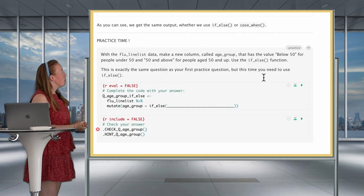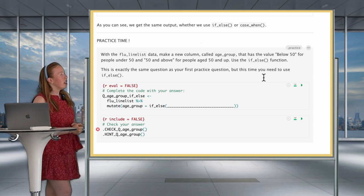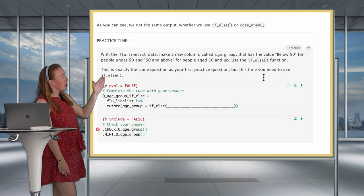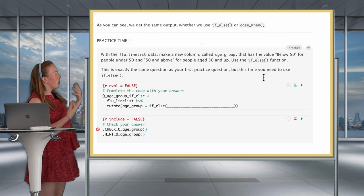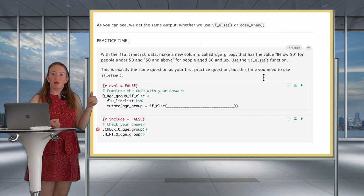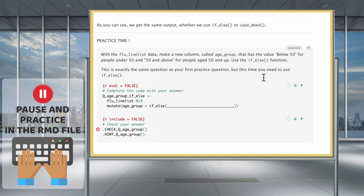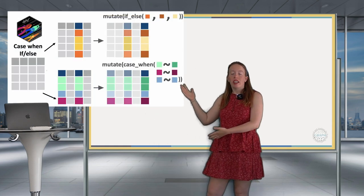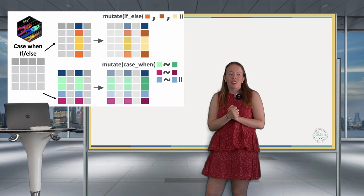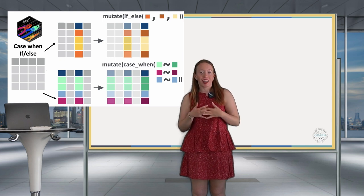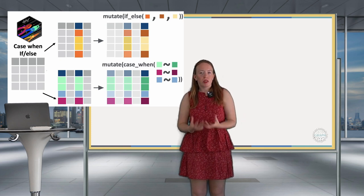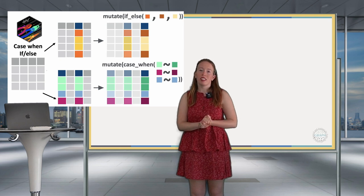The last practice question: using the flu line list, make the age_group column with 'below 50' and '50 and above' using if_else — the same as your first practice question but written with an if_else statement. Congratulations, you now master case_when and if_else within mutate. These conditional transformations are an essential part of data wrangling, so take your time to become familiar with them. See you in the next topic!